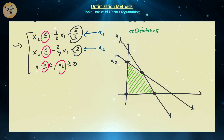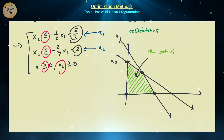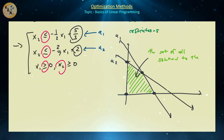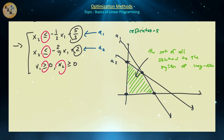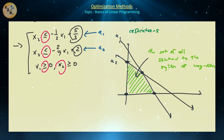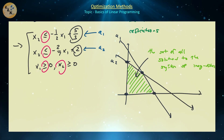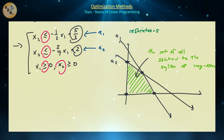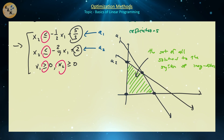That shaded polygonal region is the set of all solutions to the system of inequalities. Some people call this the feasible region, but since we have no optimization function yet, there's nothing feasible about it yet. It will be called the feasible region once we have an objective function that we seek to optimize.